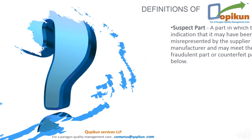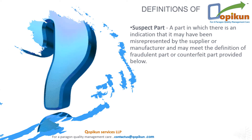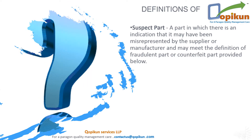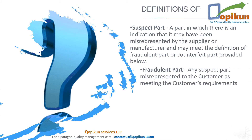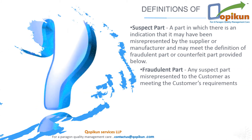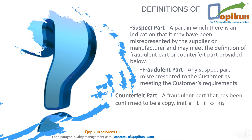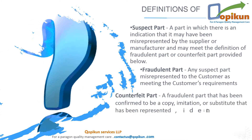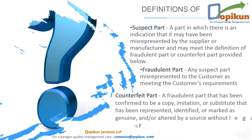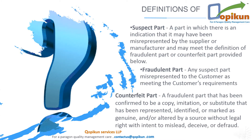Definitions: Suspect part — a part in which there is an indication that it may have been misrepresented by the supplier or manufacturer and may meet the definition of fraudulent part or counterfeit part. Fraudulent part — any suspect part misrepresented to the customer as meeting the customer's requirements. Counterfeit part — a fraudulent part confirmed to be a copy, imitation, or substitute represented, identified, or marked as genuine, and/or altered without legal right with intent to mislead, deceive, or defraud.